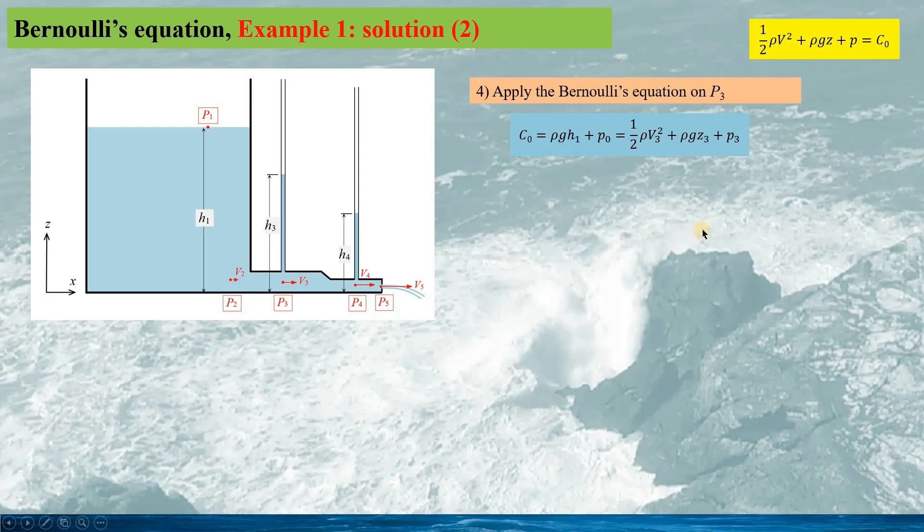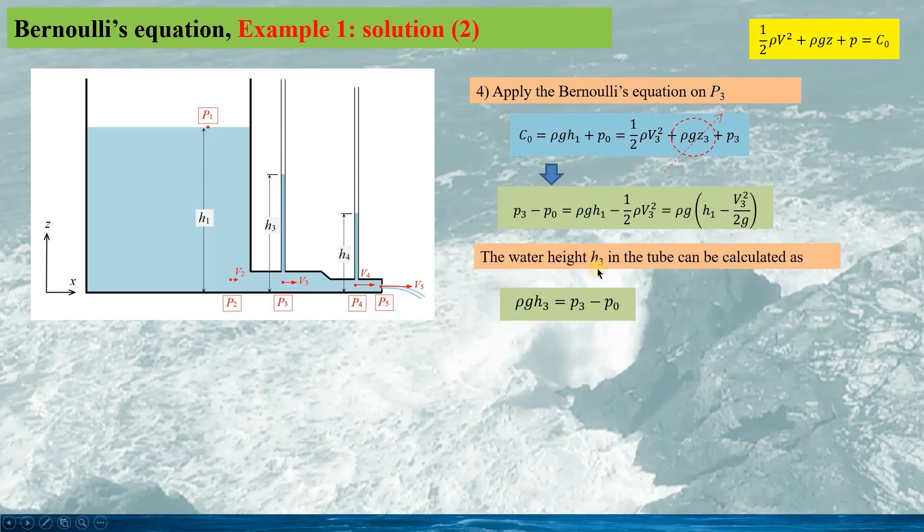Now we can apply the Bernoulli's equation on P3. We notice Z3 is 0, so we can have the expression P3 minus P0 equaling this expression. The water height h3 in the vertical tube can be calculated. We can calculate h3 equaling 3.21m, slightly less than the water tank which is 4m.